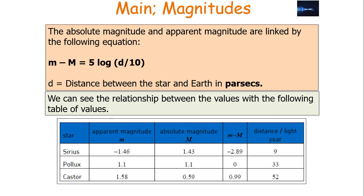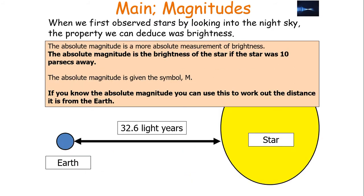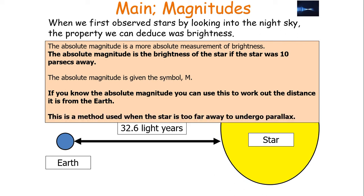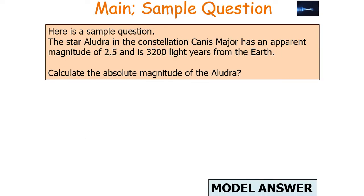We can see the relationship between the values in a table showing how absolute and apparent magnitudes link to each other. If you know the absolute magnitude, you can use this to work out the distance of a star from Earth. This is a method used when a star is too far away to measure its distance via the parallax method.